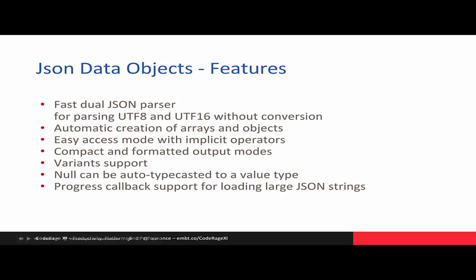JSON.objects is a great parser. Here are some of its features: fast dual JSON parser for parsing UTF-8 and UTF-16 without conversion, automatic creation of arrays and objects, easy access mode with implicit operators, compact and formatted output modes, variant support — values can be auto typecast to a value type — and progress callback support for loading large JSON strings.